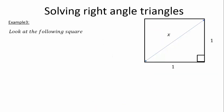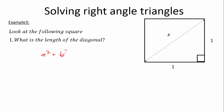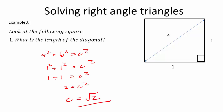Let's look at this example. Look at the following square — what is the length of the diagonal? This is very easy. You can see that this is a triangle, and we know A squared plus B squared equals C squared. A squared is 1 squared plus B squared is 1 squared equals C squared. 1 plus 1 is equal to C squared. So C is equal to the square root of 2, and we're going to leave it like that.